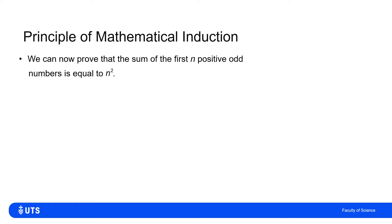Another statement we can establish by induction is that the sum of the first n positive odd numbers is n². The first positive odd number is 1, the second is 3, the third is 5, then 7, then 9. They're all of the form 2k - 1, where k goes from 1 to n, and the claim is that this sum equals n².